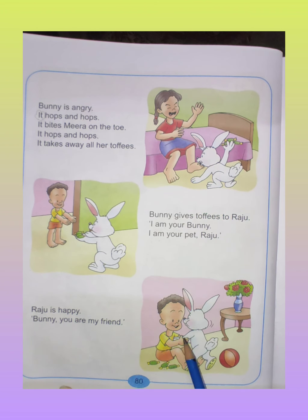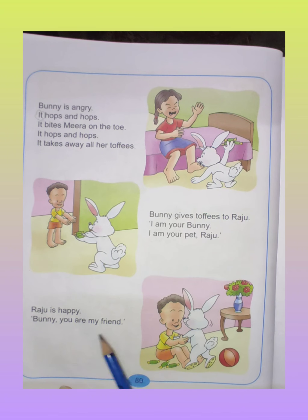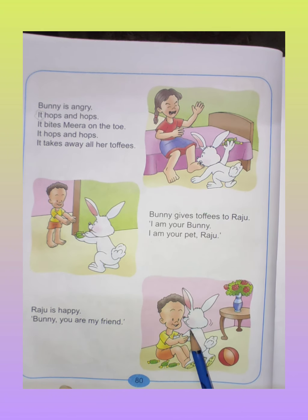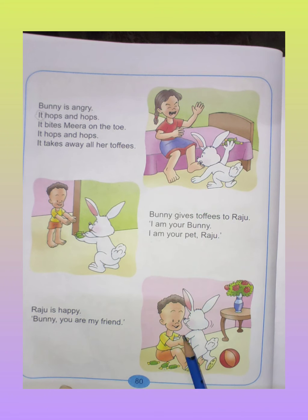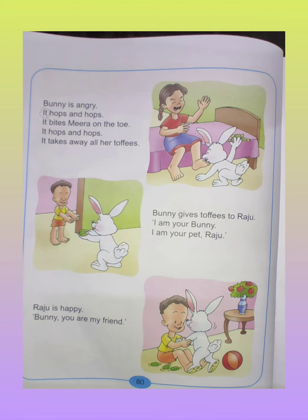Raju is happy — you can see in this picture Raju bahut khush hai. Raju says to Bunny: 'Bunny, you are my friend.' So children, you have to read pages 79 to 82 two times. Now we will do question and answers.